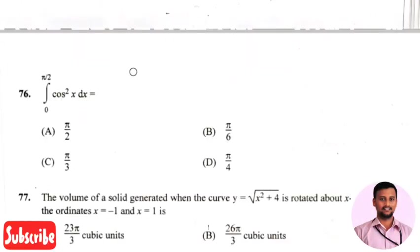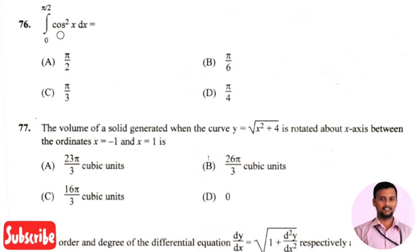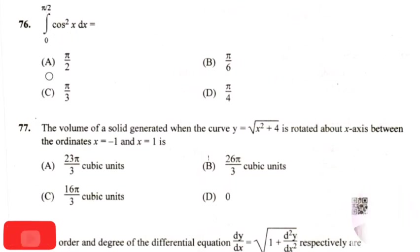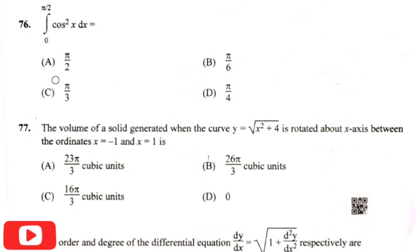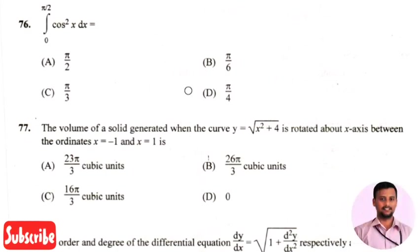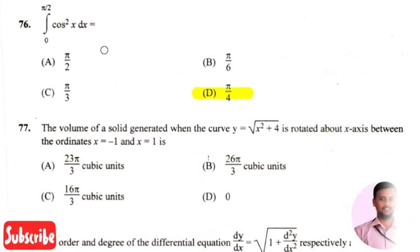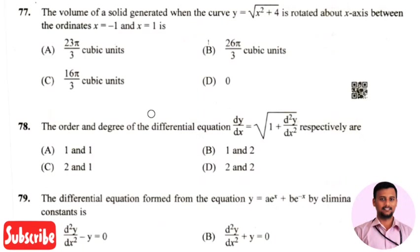The next question: the integration of cos squared x times dx from 0 to pi/2 is? The right answer is option 4, that is pi/4.